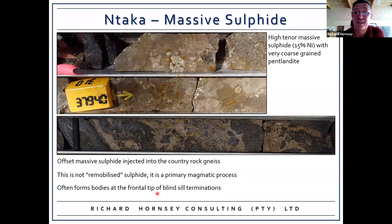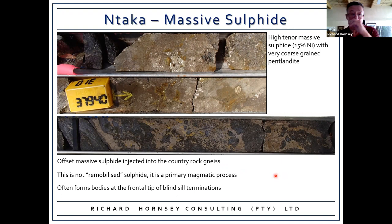Massive sulfide often forms bodies at the frontal tips of blind sill terminations — as is the case at Antarka Hill. Probably very similar at Nova in Western Australia, where the intrusion appears to terminate and the massive sulfide is at the frontal closure.